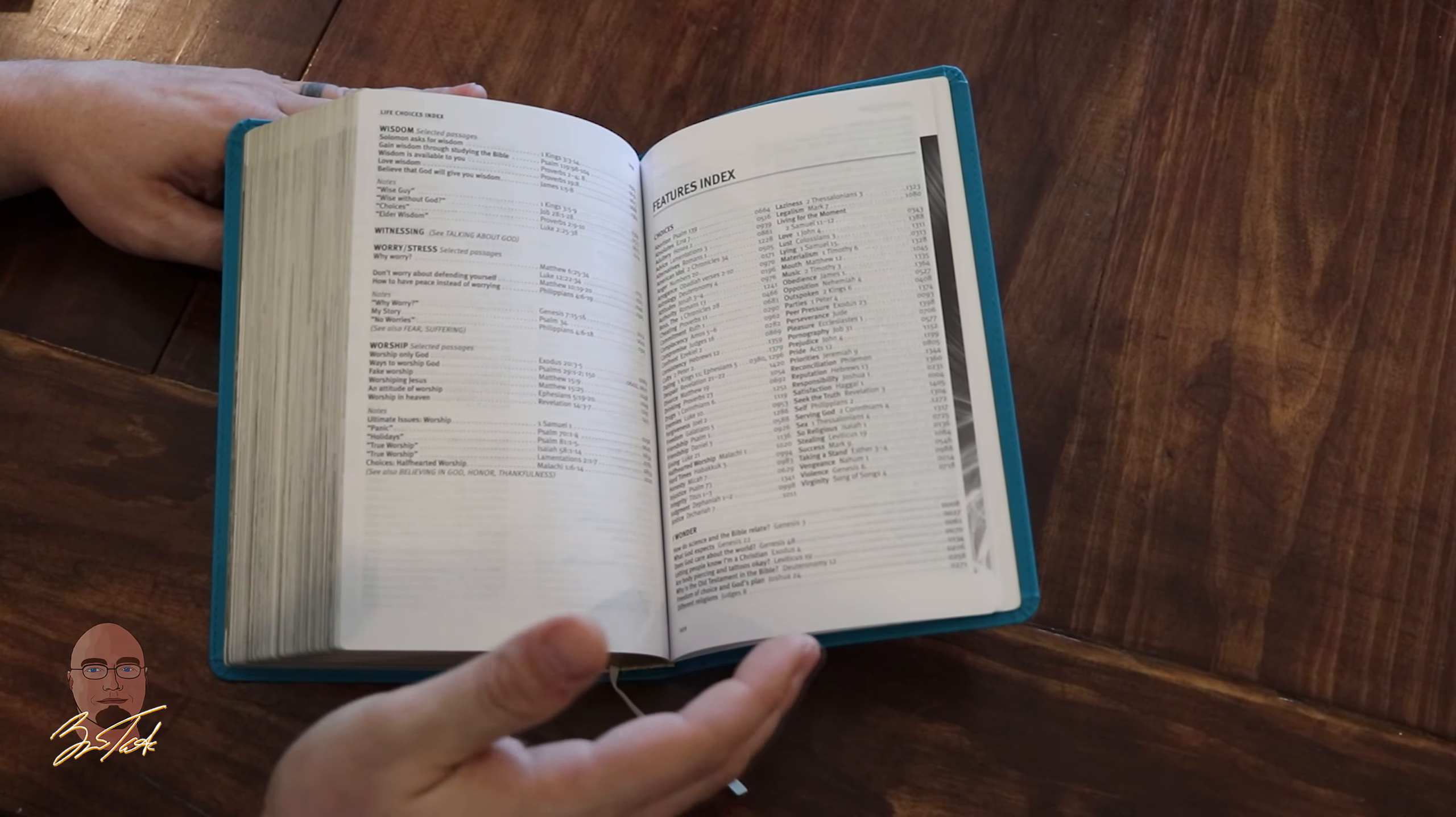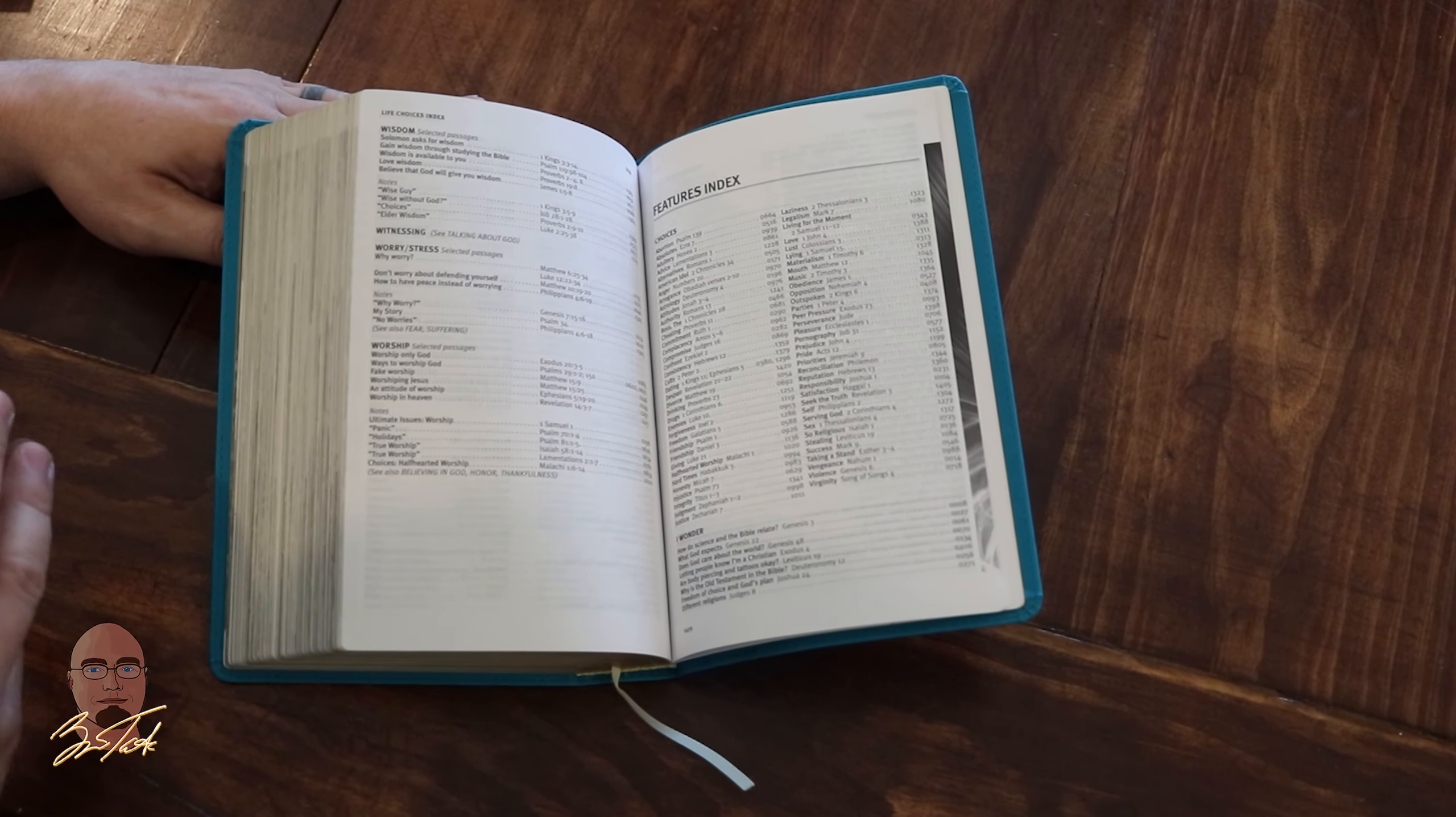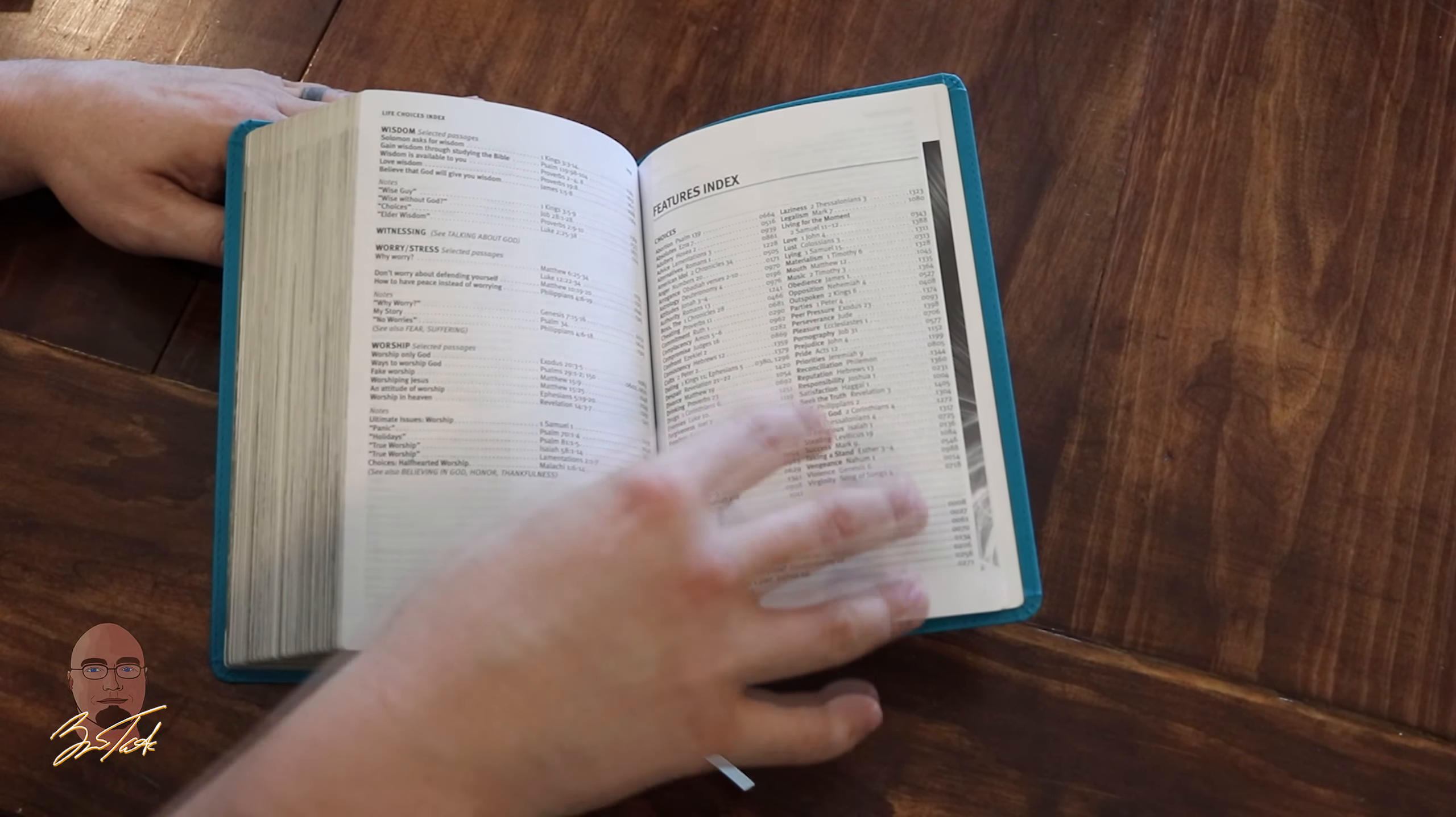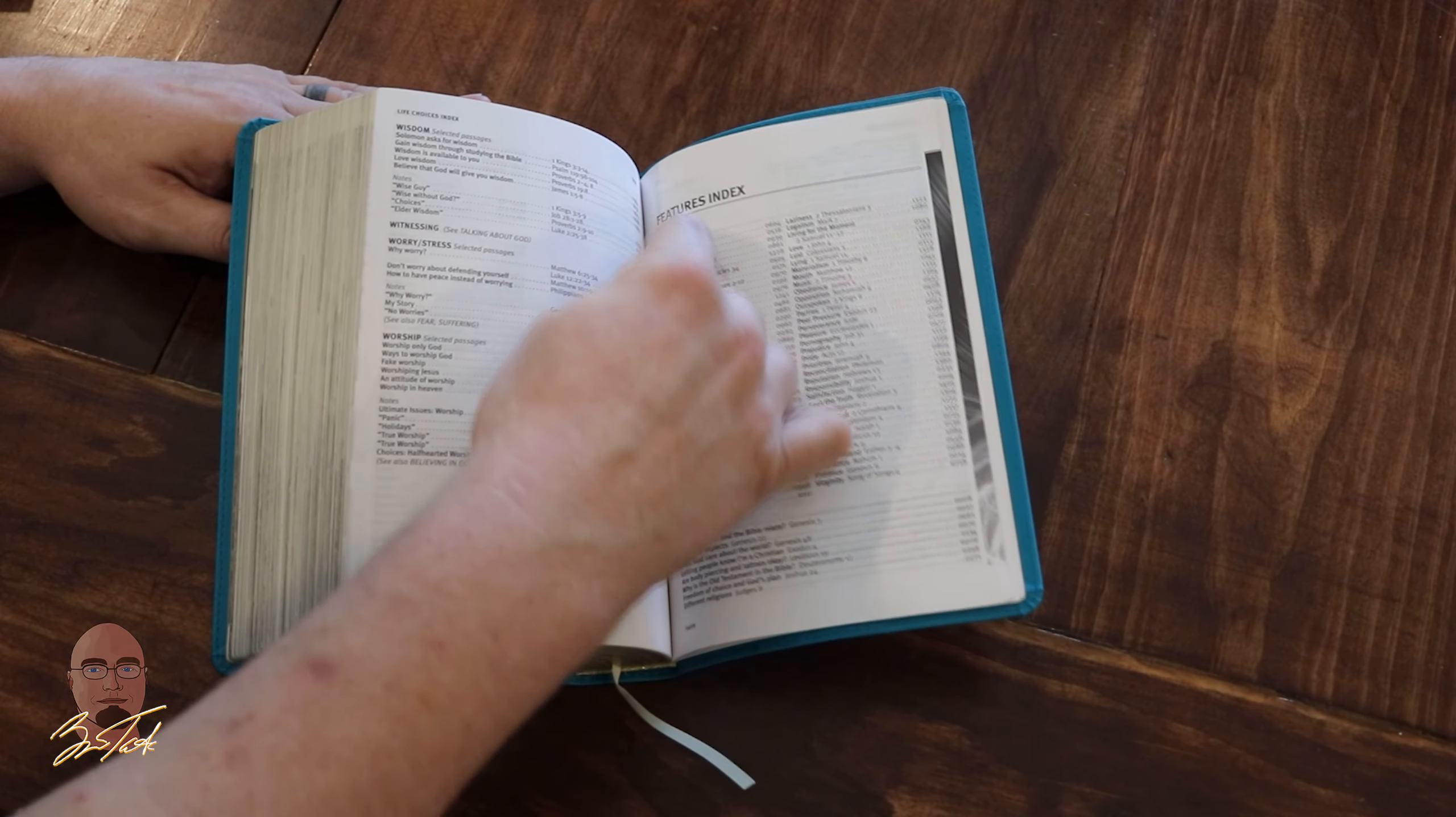Then you'll come to the Features Index, and you have all those different features that were mentioned at the beginning of the Bible. You have them indexed here, which is why I think this also needs to be in the front. This is an explanation of the feature 'Choices,' and here are the page numbers.